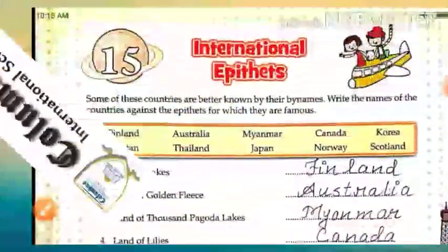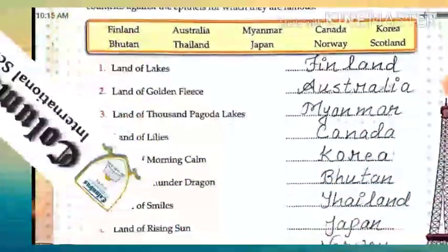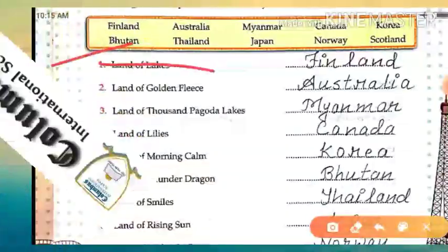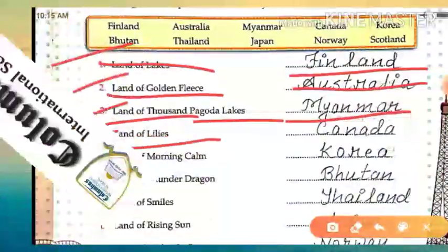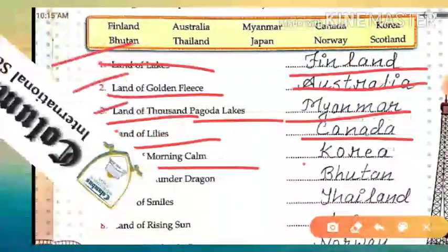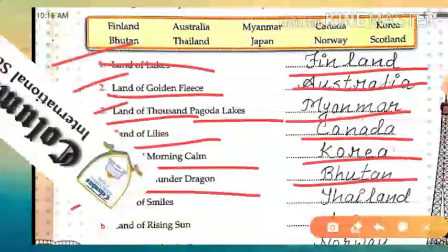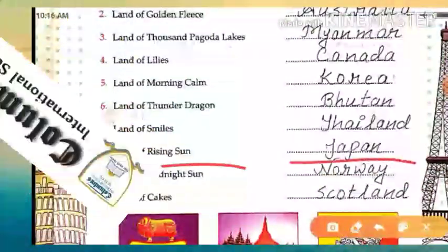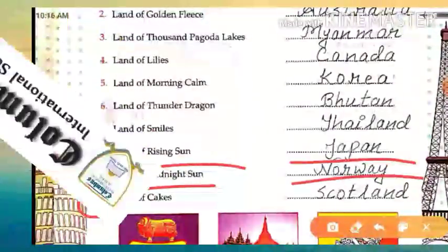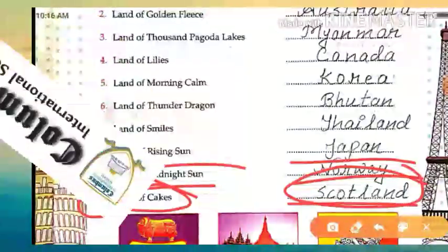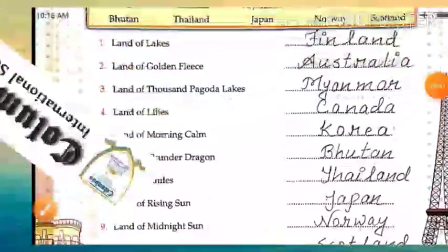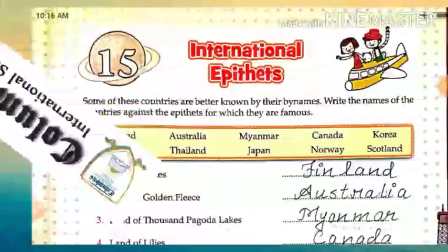Let me repeat it all at once. Land of Lakes — Finland. Land of Golden Fleece — Australia. Land of Thousand Pagodas — Myanmar. Land of Lilies — Canada. Land of Morning Calm — Korea. Land of Thunder Dragon — Bhutan. Land of Smiles — Thailand. Land of Rising Sun — Japan. Land of Midnight Sun — Norway. Land of Cakes — Scotland. Clear? That was page number 15, Chapter 15.